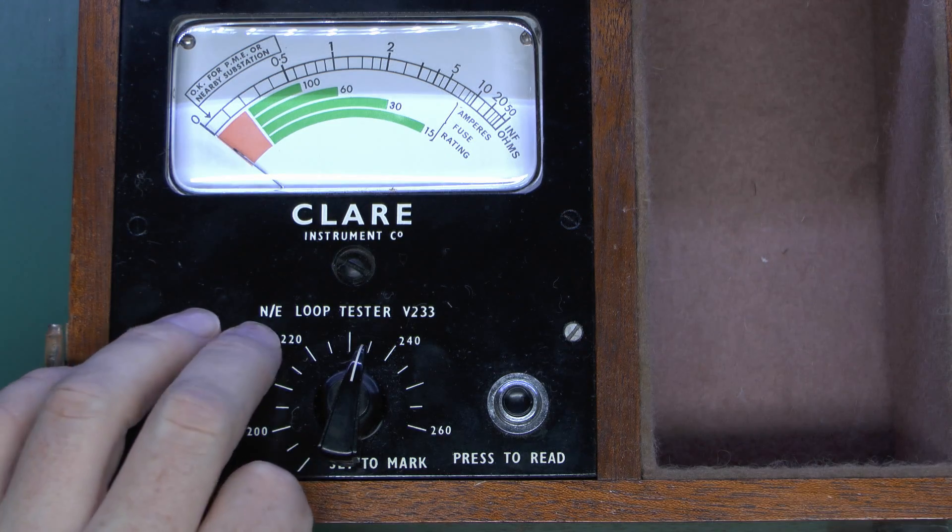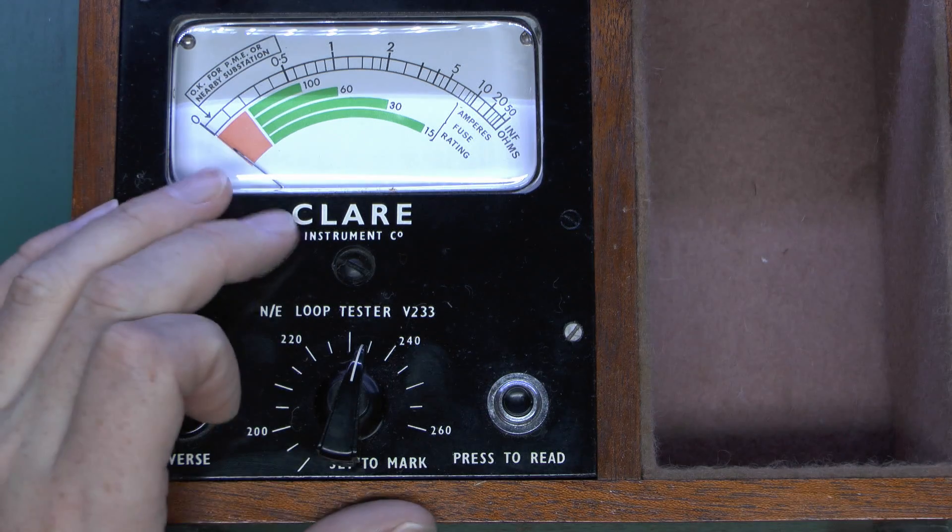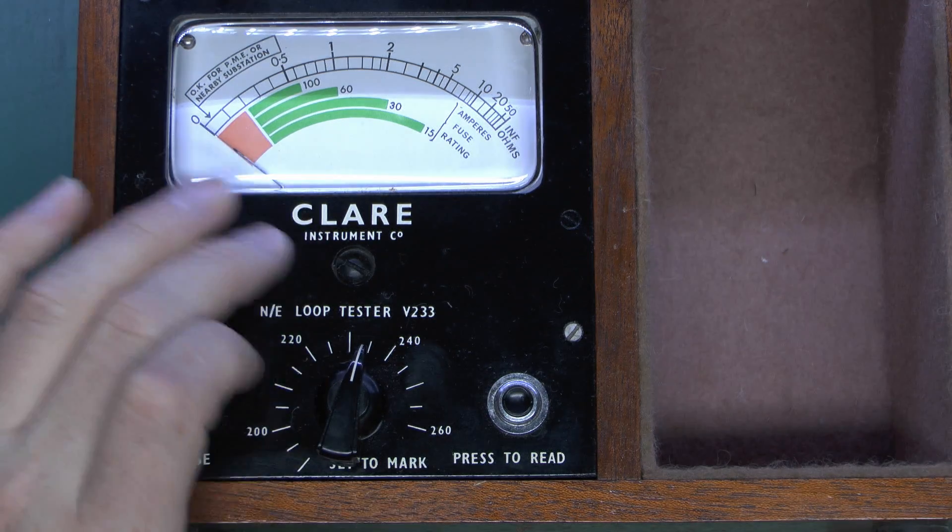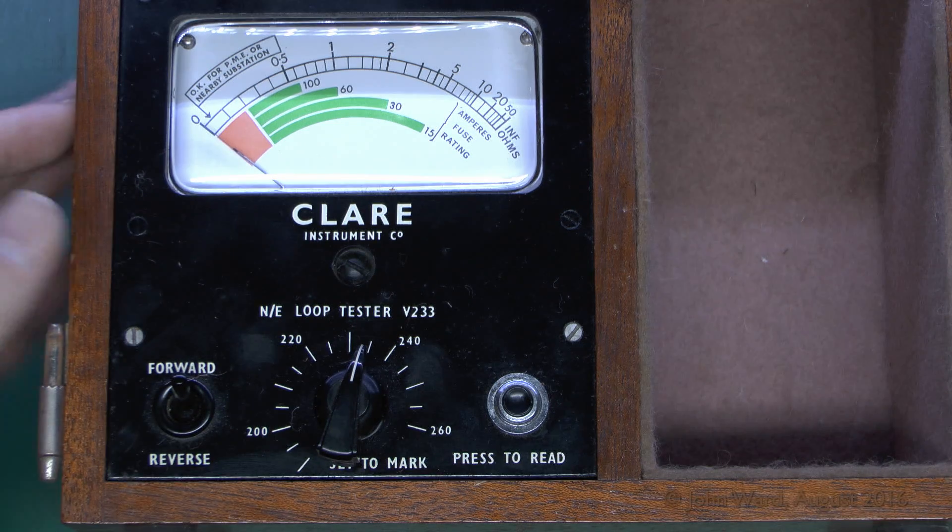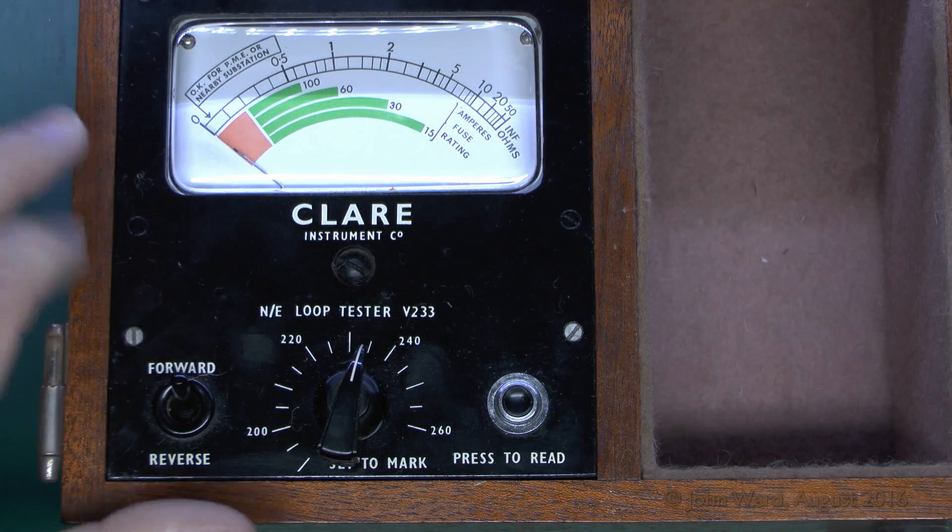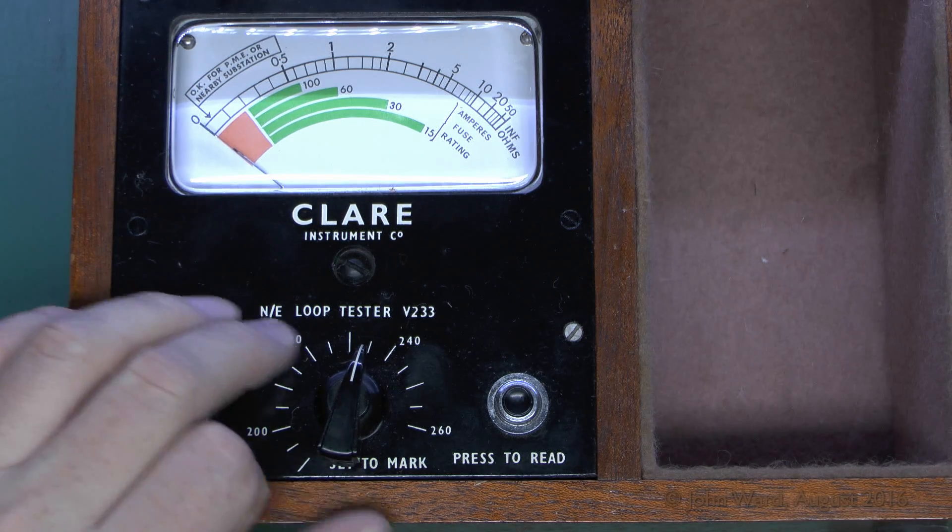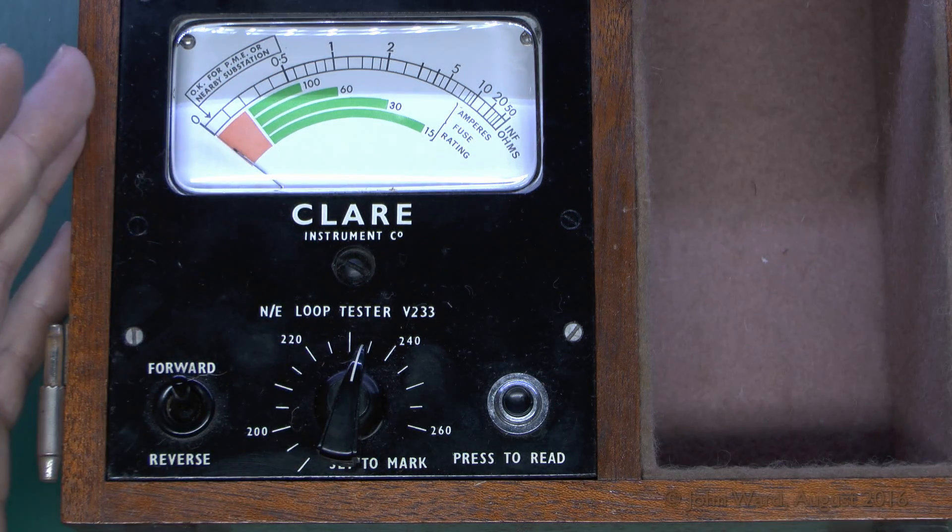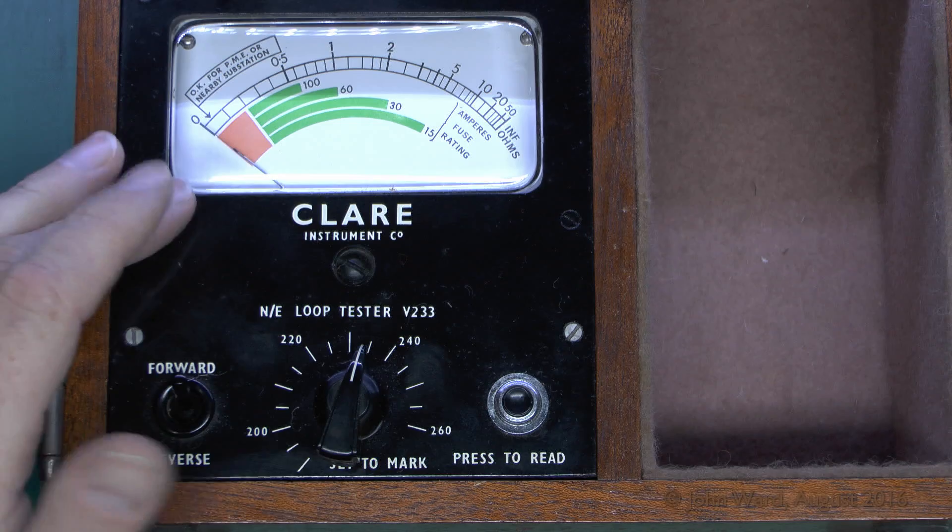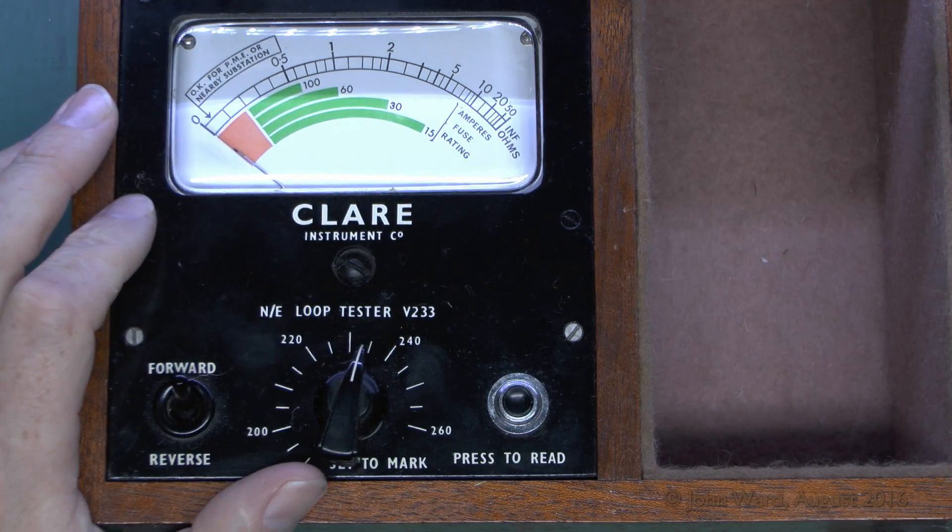So this is a neutral earth loop tester, model V233. Clare, as a company, doesn't exist anymore, but when they did they made a whole series of test equipment, all of which was primarily in this kind of wooden case style. This one's slightly unusual in it's a neutral earth loop tester, which is to test the impedance between neutral and earth. This is of the type that actually injects a current into the loop there, and then you get a reading on the scale here in ohms directly.